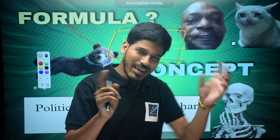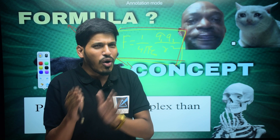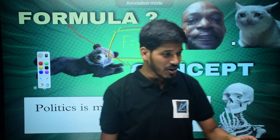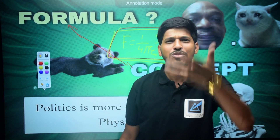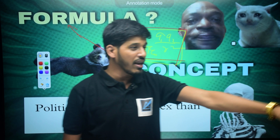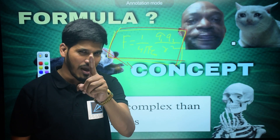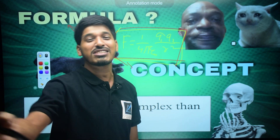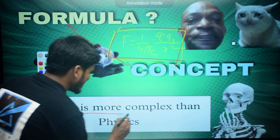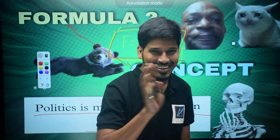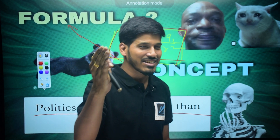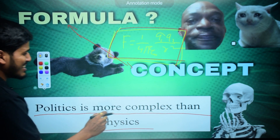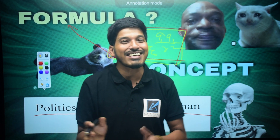So I say: first, understand every formula from the concept. Any formula you get — first understand it, then get the concept from it. If there is a problem, the solution comes from the formula, and the formula comes from the concept. Look at the formula: why is this formula here? All the concepts will emerge. Politics is more complex than physics — a very big scientist has said this. If you know who said it, tell me.